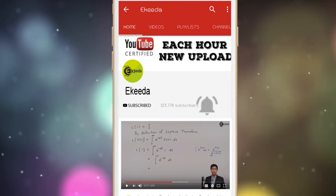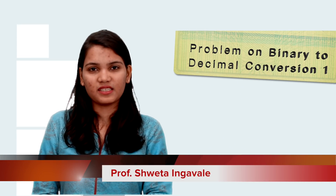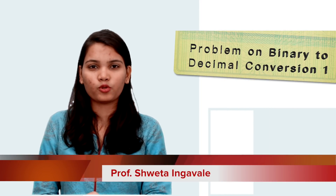Do subscribe to the IGRA channel and press the bell icon to get updates. Our chapter name is Number System and today's video is on problems based on binary to decimal conversion. In the previous video we covered the binary number system and binary to decimal conversion. In today's video we will see how to convert different types of binary numbers into decimal, and we will solve different types of numericals.